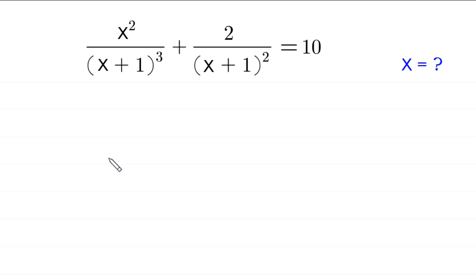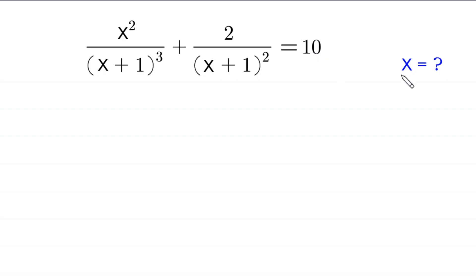Hello everyone, you are welcome to how to solve this very nice algebra equation. x squared over (x+1) whole cubed plus 2 over (x+1) whole squared is equal to 10. Our job is to find all possible values of x.